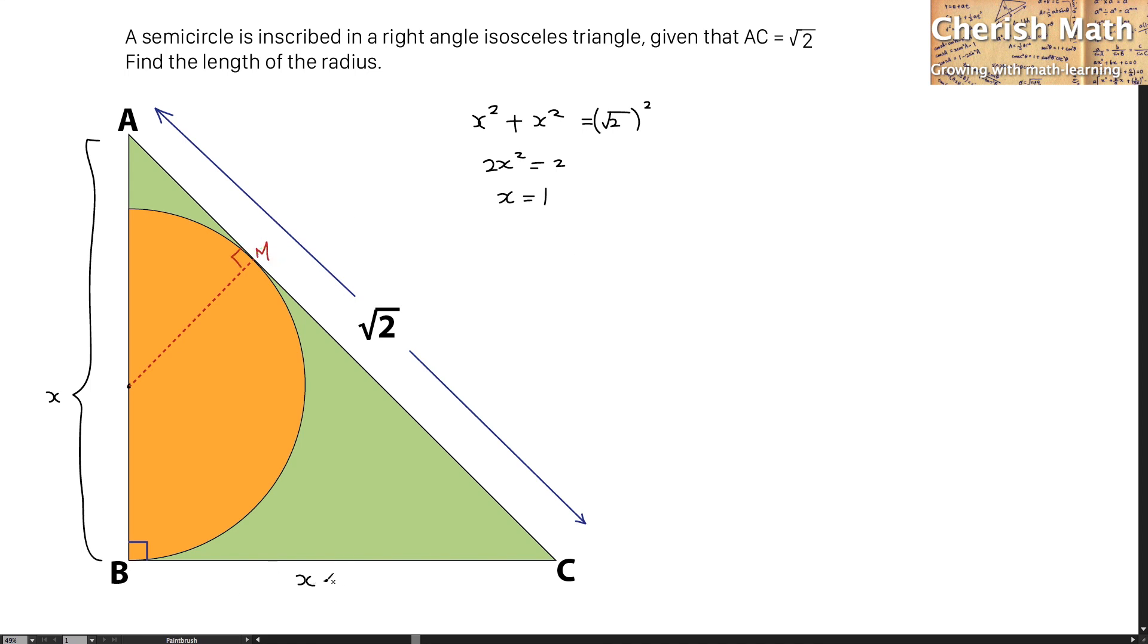Since the value of X that I'm getting here is 1, that means BC is a line of tangent at the point B, and MC is a line of tangent at the point M. That shows that MC and BC is in the same length, which is 1 unit.